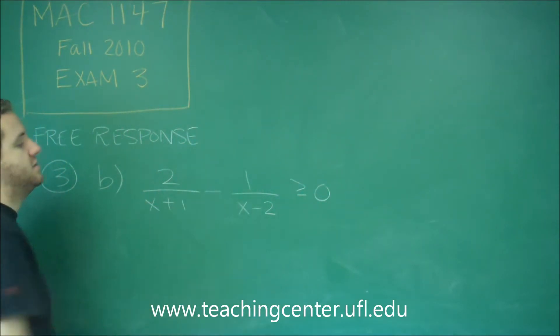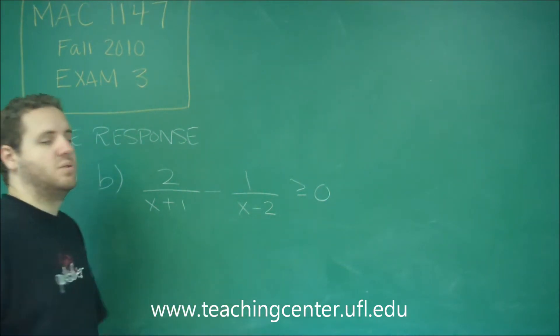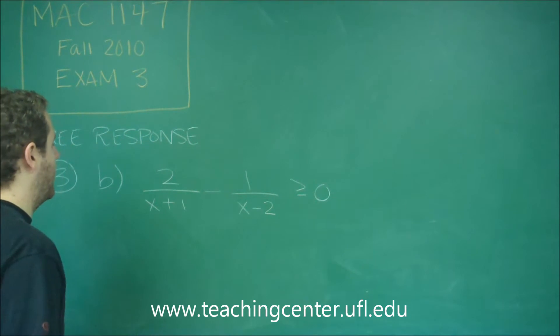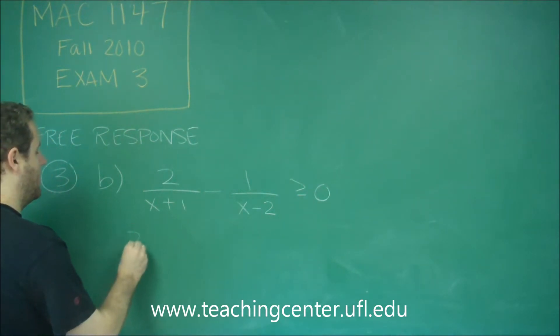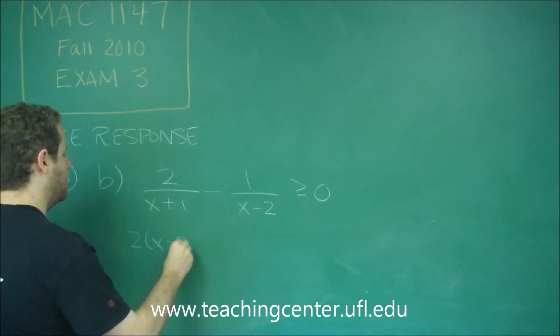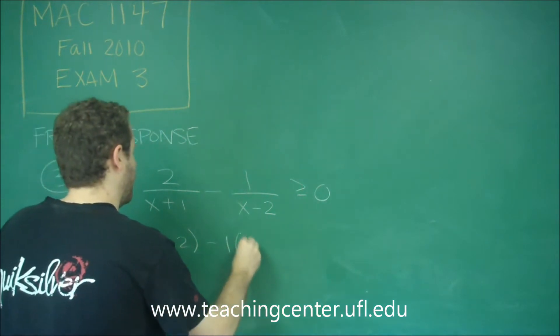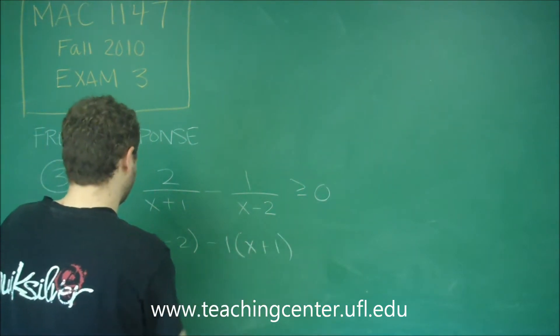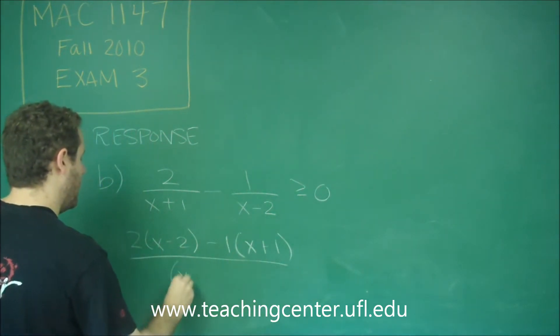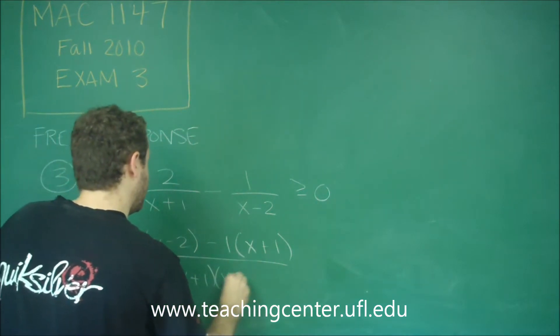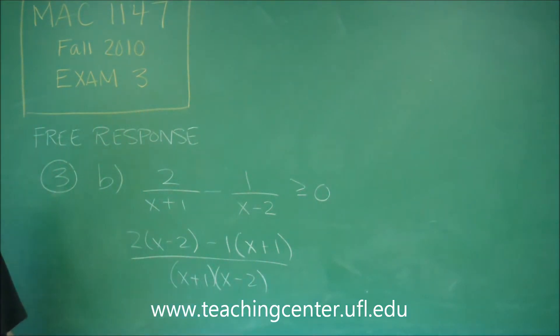Now to solve this, I need to combine these two and that involves getting a common denominator. x plus 1 and x minus 2 are separate terms. So I have to multiply the left one by x minus 2 and the right one by x plus 1. In order to put these together, our common denominator would just be their product.